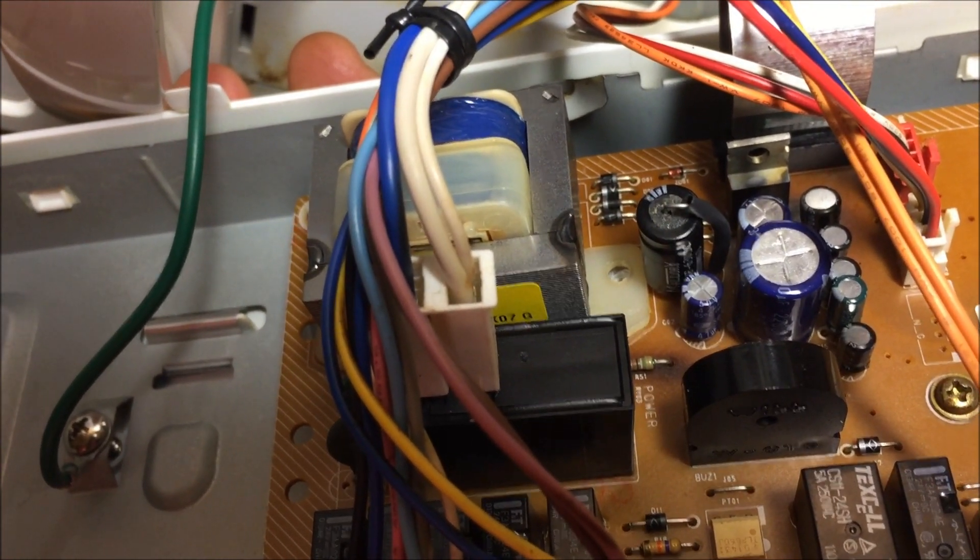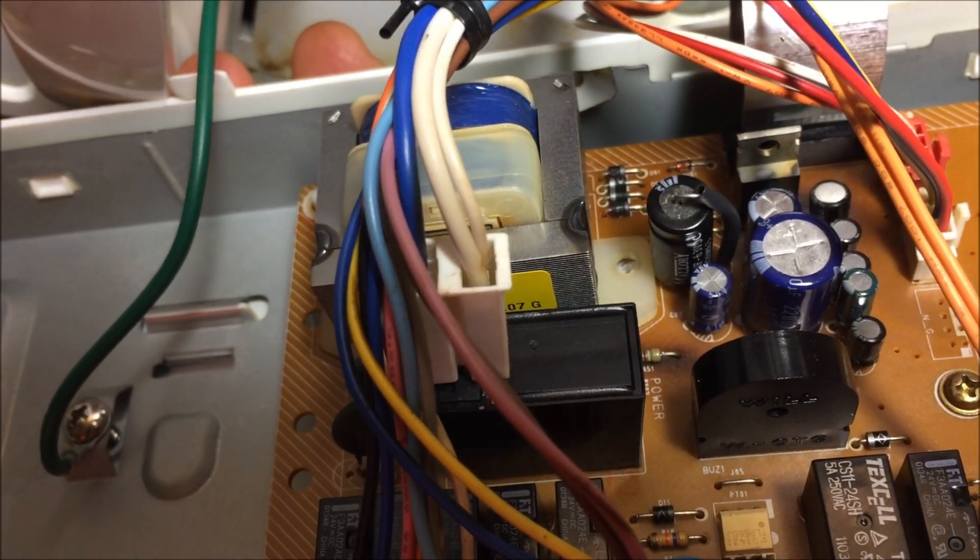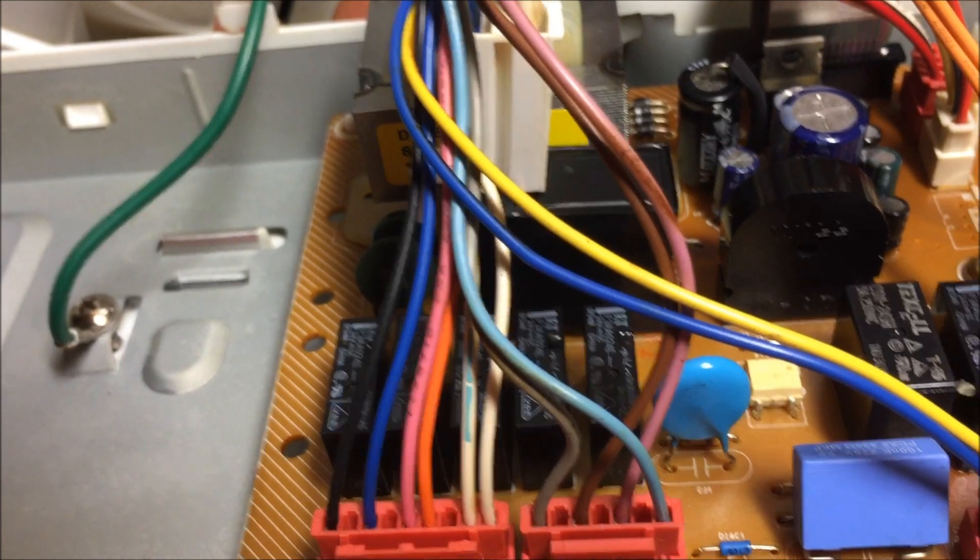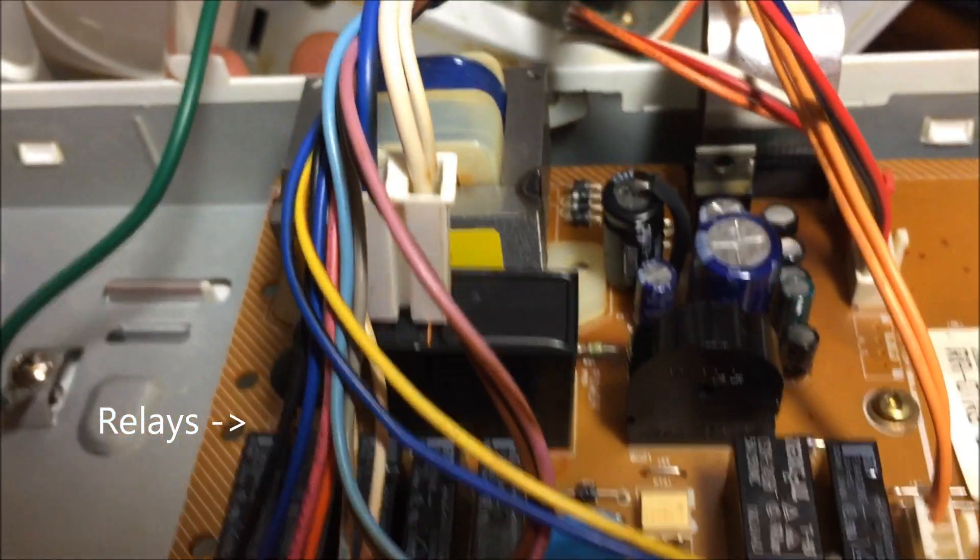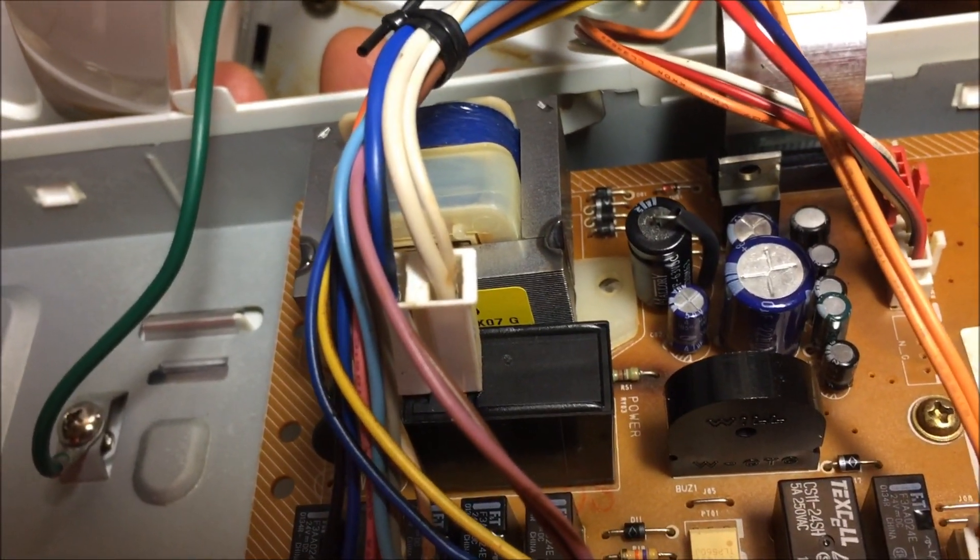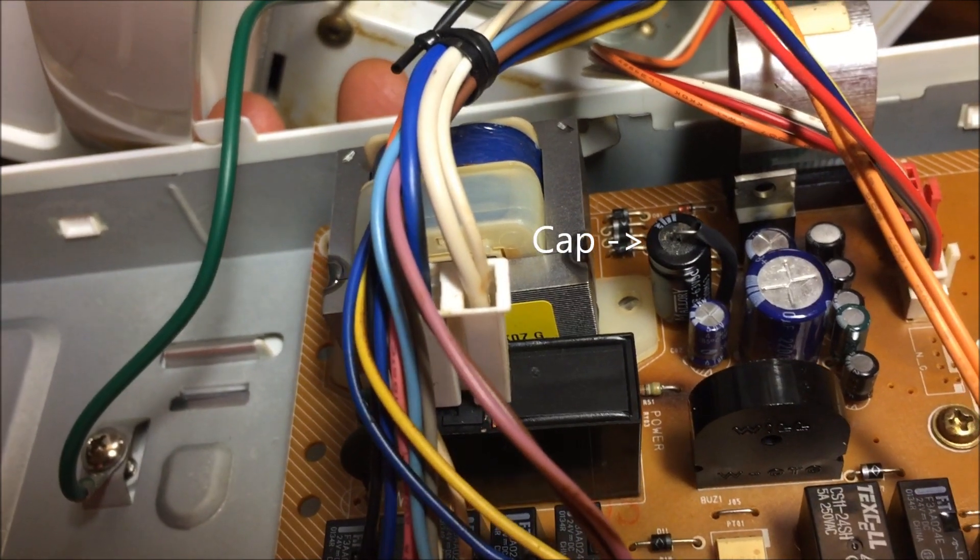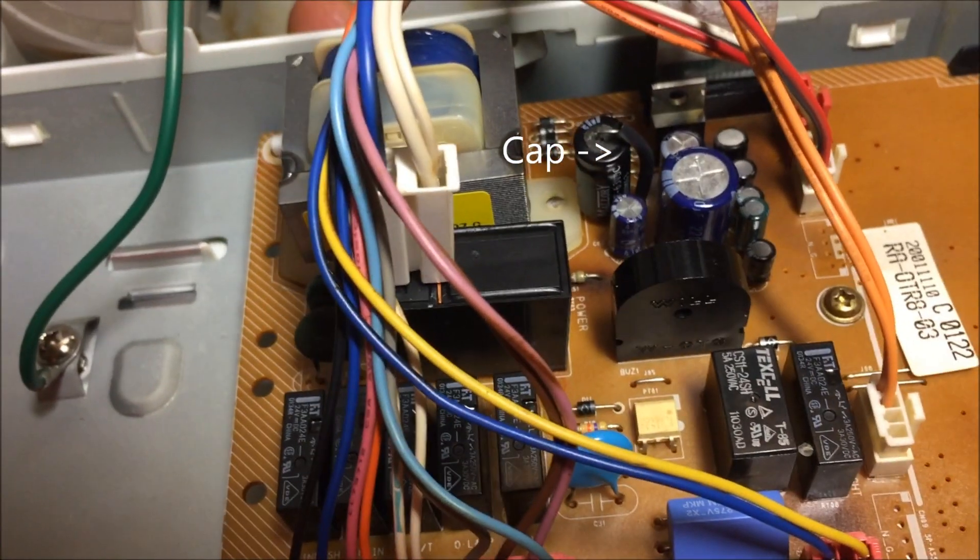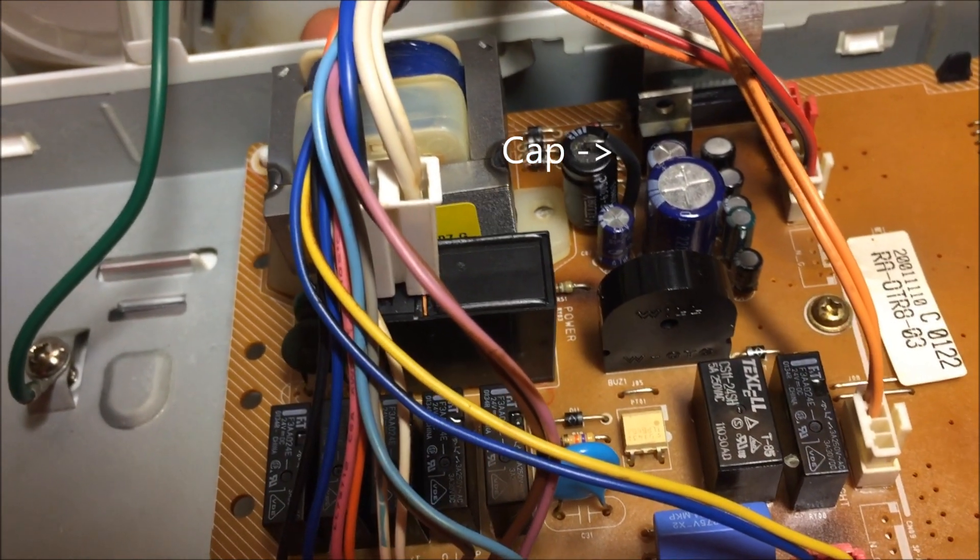And here's your relays that are buzzing right there. But that's where that capacitor goes - it's been replaced. Oven works fine now, so hope that helps. Remove the wires before you unscrew the circuit board so it's not jiggling everywhere.